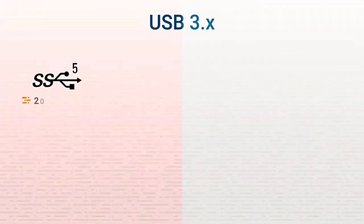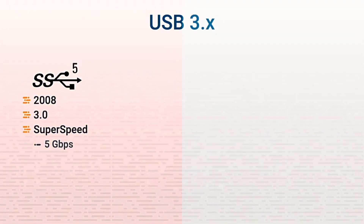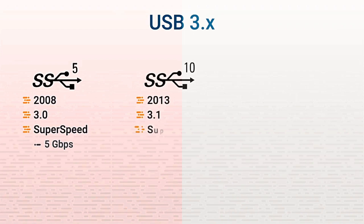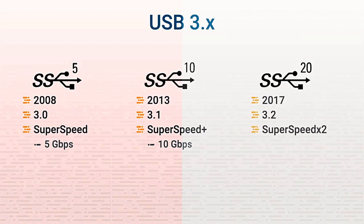It was a number of years later that USB 3.0 came along in 2008. It was called super-speed USB and it has a maximum data rate of 5 gigabits per second. Then in 2013, an enhancement was released in version 3.1 called super-speed plus, with data rates up to 10 gigabits per second. And in 2017, 3.2 was released, called super-speed times 2, with data speeds up to 20 gigabits per second.